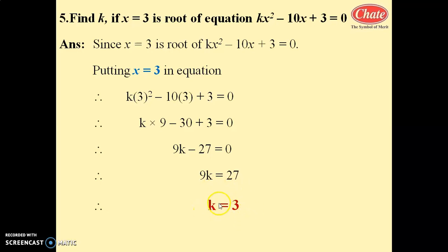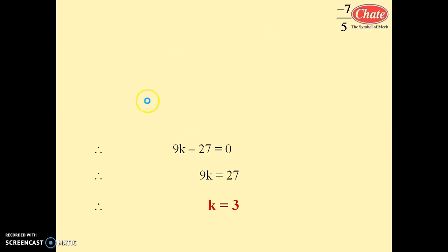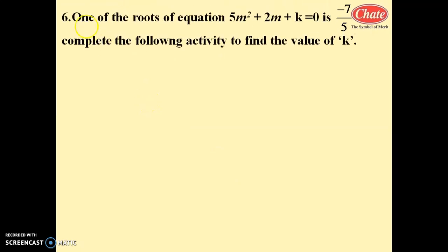k equals 3 is the value of k when one root of the quadratic equation kx squared minus 10x plus 3 equals 0 is 3. Next question, the last question from practice set 2.1, number 6: one of the roots of the equation 5m squared plus 2m plus k equals 0 is minus 7 by 5. We have to complete the following activity to find the value of k.